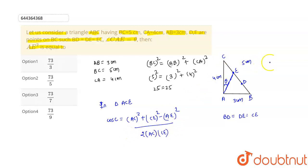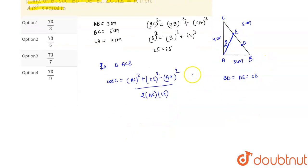So here cos C is equal to base by hypotenuse. Our base is 4 and hypotenuse is 5, so cos C becomes equal to 4 by 5.